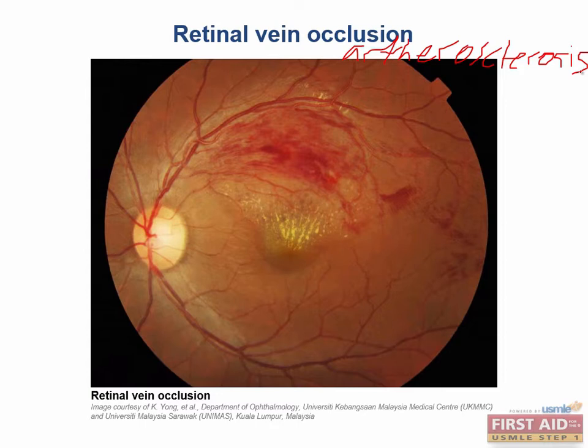Retinal vein occlusion is typically seen in elderly patients who will complain of sudden blurred vision or a central visual field defect. On a fundoscopic exam you will typically see hemorrhages, as seen here.